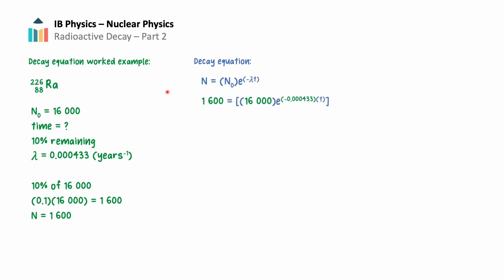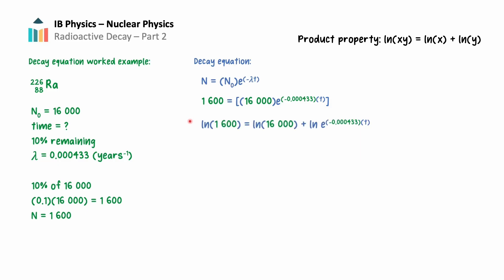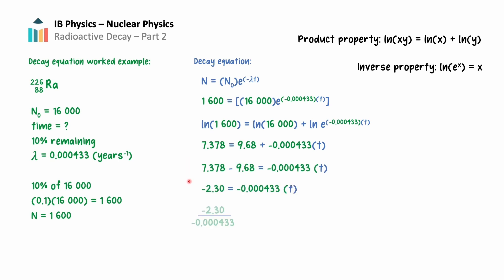Utilizing our decay equation, substitute in the numbers given. Time is still in the exponent, so we must employ the product and inverse properties of natural logarithms. The product property states that the natural log of x times y equals the natural log of x plus the natural log of y. The inverse property states that the natural log of e to the x equals x. Simplifying using a calculator and applying these properties, we solve for t: the time for radium-226 to decay to 10% of its initial amount is approximately 5,300 years.